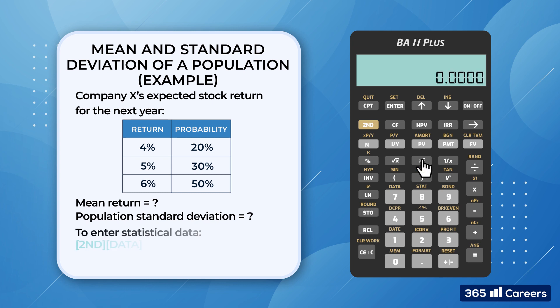First, we provide the necessary input data by pressing 2nd Data. As you can see, the calculator remembers the values we entered in our previous task. So, we need to clear the memory registers by pressing 2nd Clear Work. Now we're ready to continue.